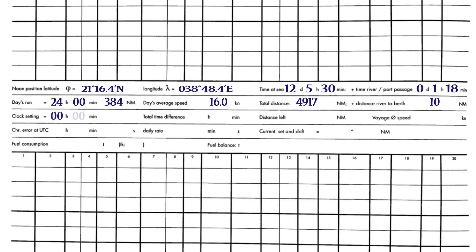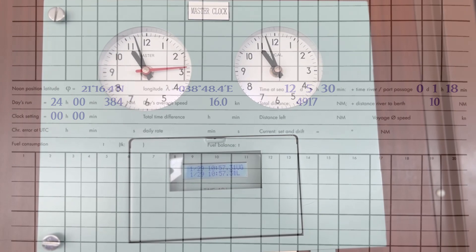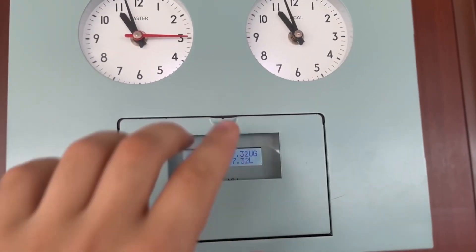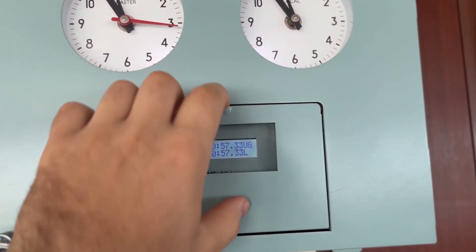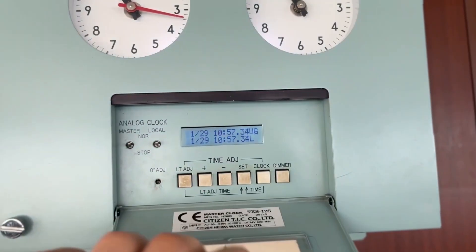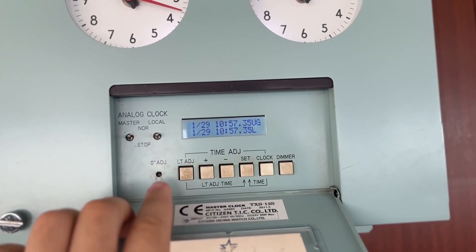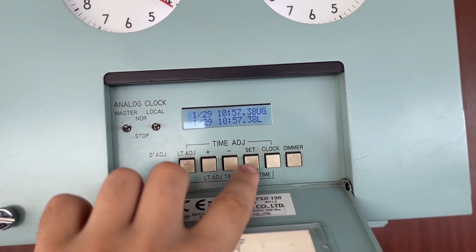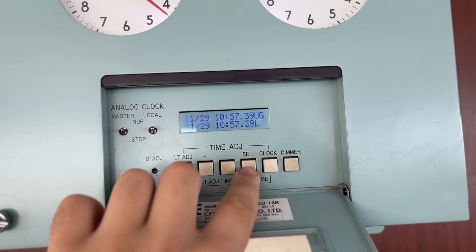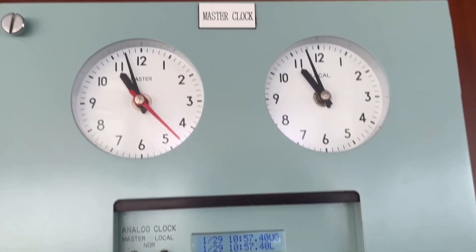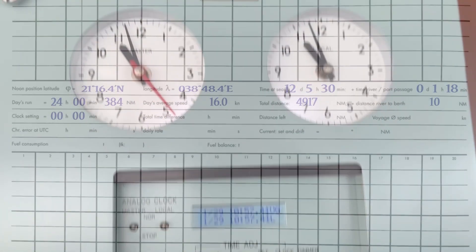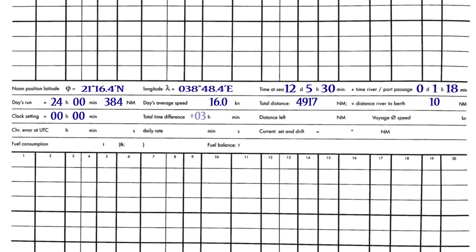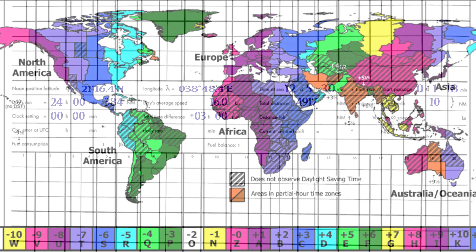Clock setting: if the ship's clock has been advanced or retarded due to time zone changes, it is plus one hour or minus one hour respectively. Total time difference refers to the time zone in which the vessel is located.